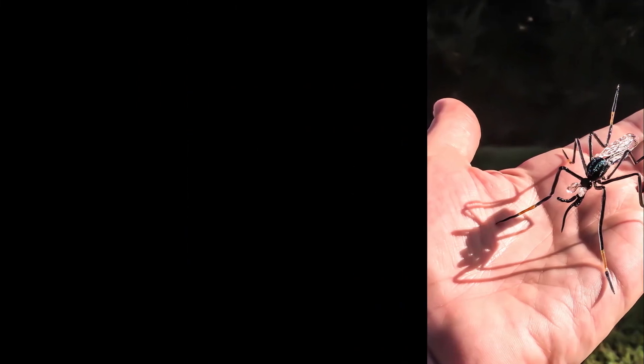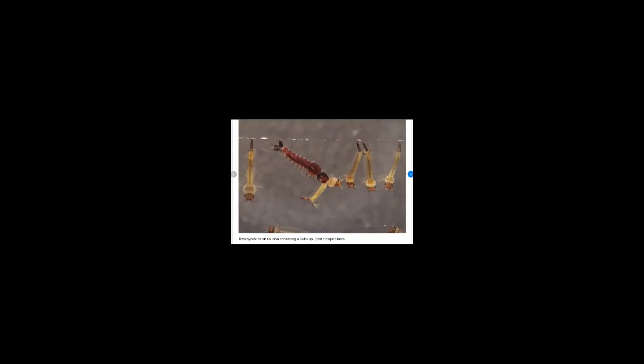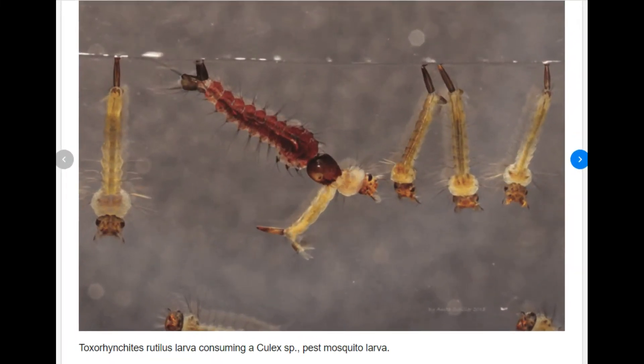Mosquitoes of this genus have their breeding grounds inside tree holes and artificial containers. They do not pose any risk to humans as they feed on plant nectar. Interestingly, larvae of these mosquitoes prey on the larvae of other mosquitoes in their region.